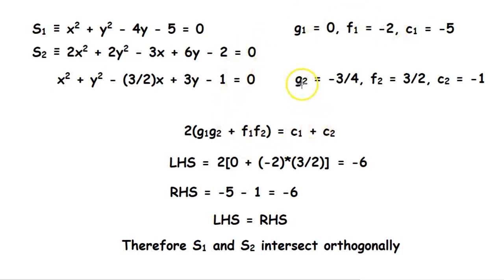Similarly, g₂ will be -3/2 divided by 2, so that will be -3/4. And f₂ will be 3/2. So that gives us -6.